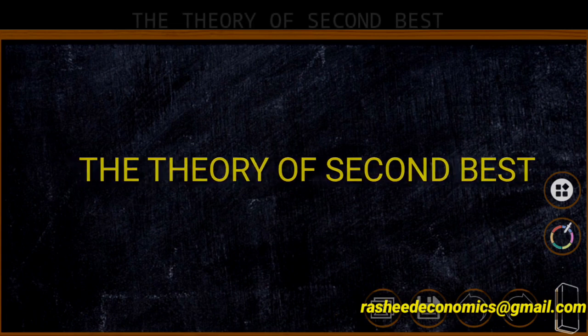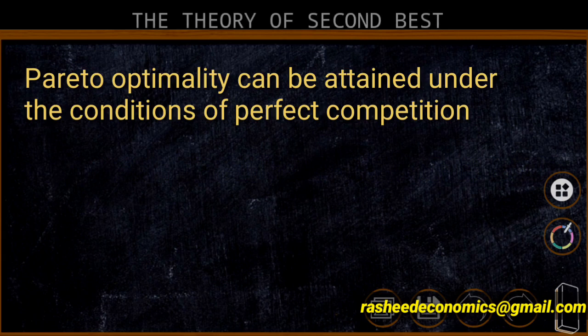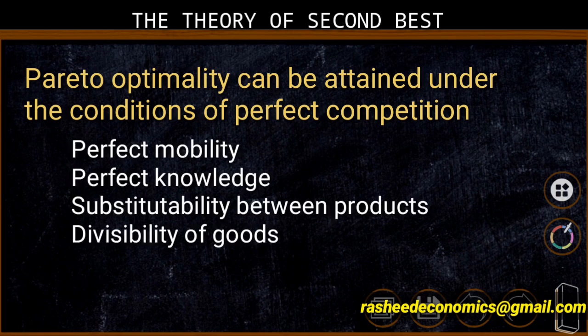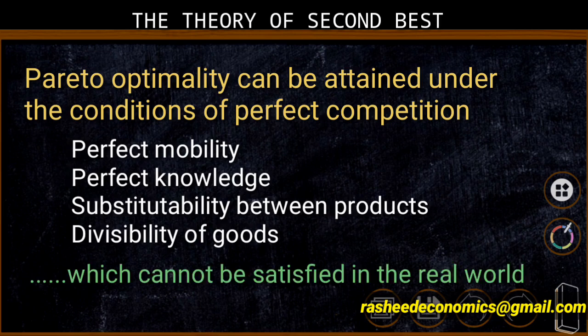We have already discussed that Pareto optimality can be attained under the conditions of perfect competition. That is, it is necessary to have perfect mobility, perfect knowledge, proper substitutability between products, and divisibility of goods, etc. But we know that all these conditions cannot be fully satisfied in the real world.